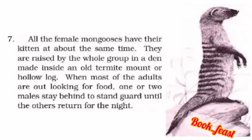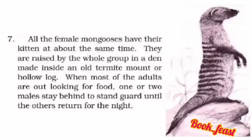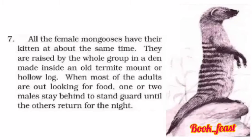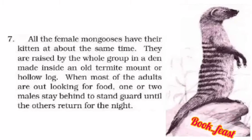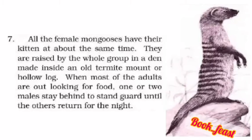All female mongooses may give birth at a time, and the young ones are kept in a den, a stone, or a structure. Their den is often an old termite mound or a hollow log. Termite mounds are called palm in some regions. This is mostly found in African places.